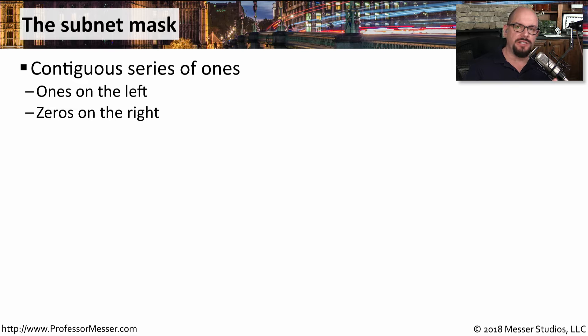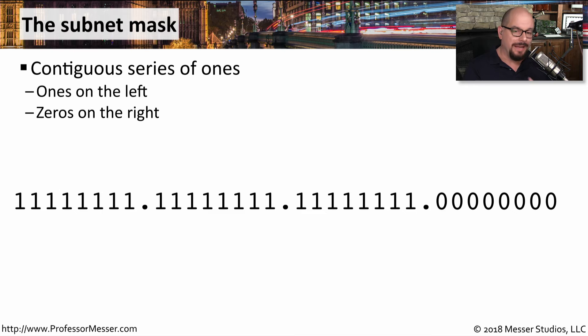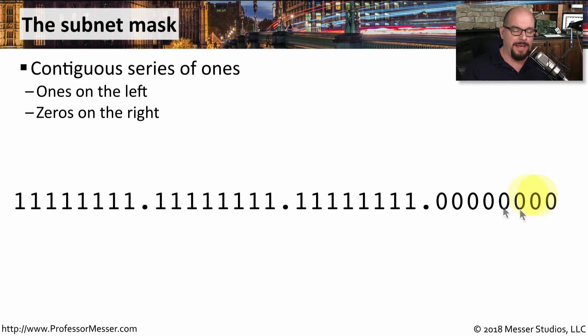You can think of the subnet mask as a contiguous series of ones, where the ones are on the left side of the subnet mask and the zeros are on the right side of the subnet mask.